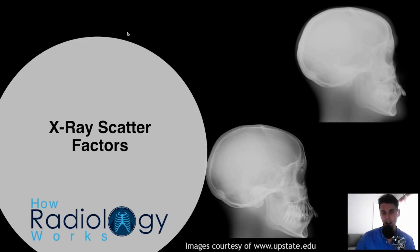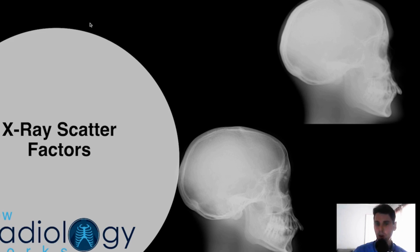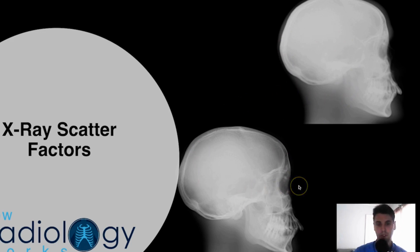Remember, in general scatter leads to degradation in image quality — it leads to an overall haze added in the background of the image. You can see this is an image with scatter, and this is an image where an anti-scatter grid has been used to reduce the scatter amount.